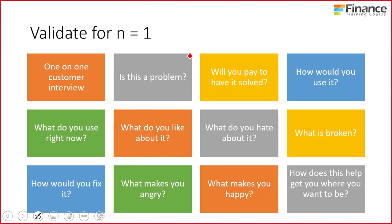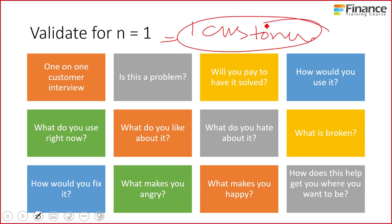So how do you reduce complexity? You reduce complexity by validating the nine dimensions for N equals one. When I say N equals one, that means validated for one customer — find one customer, just one customer. You want to find hundreds; just find one customer who's willing to pay for it. And then have a one-on-one with that one customer. This customer interview is very simple: I'm trying to do this. Is this a problem? I want to write a book on getting to grad school — is this a problem you want solved? Will you pay for it?